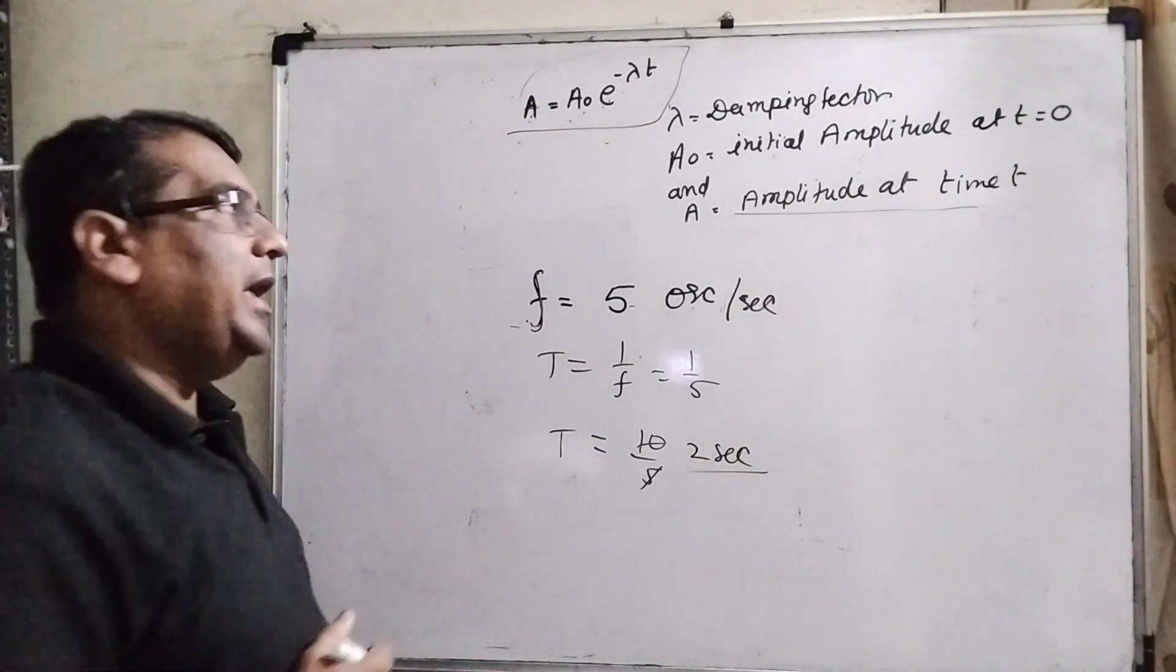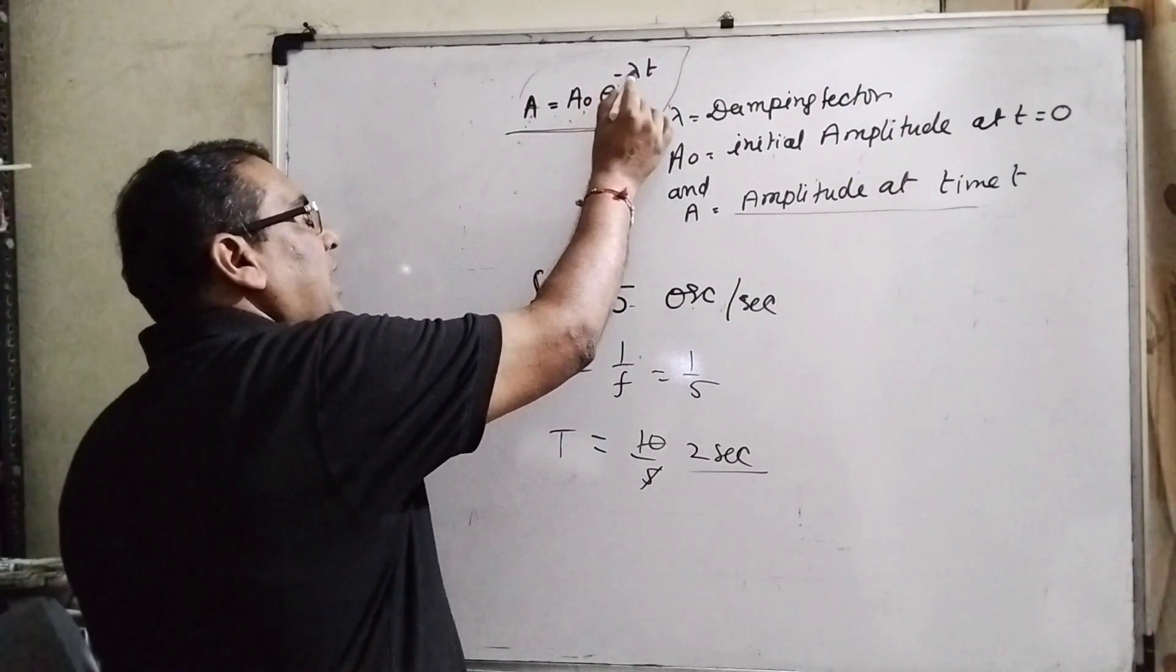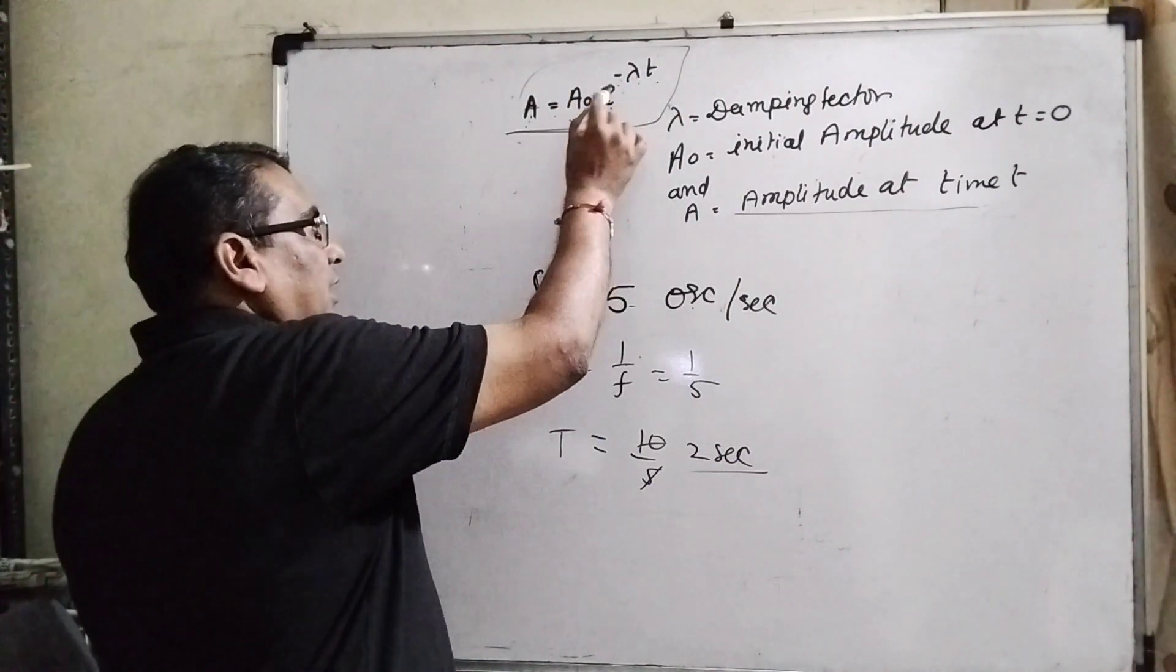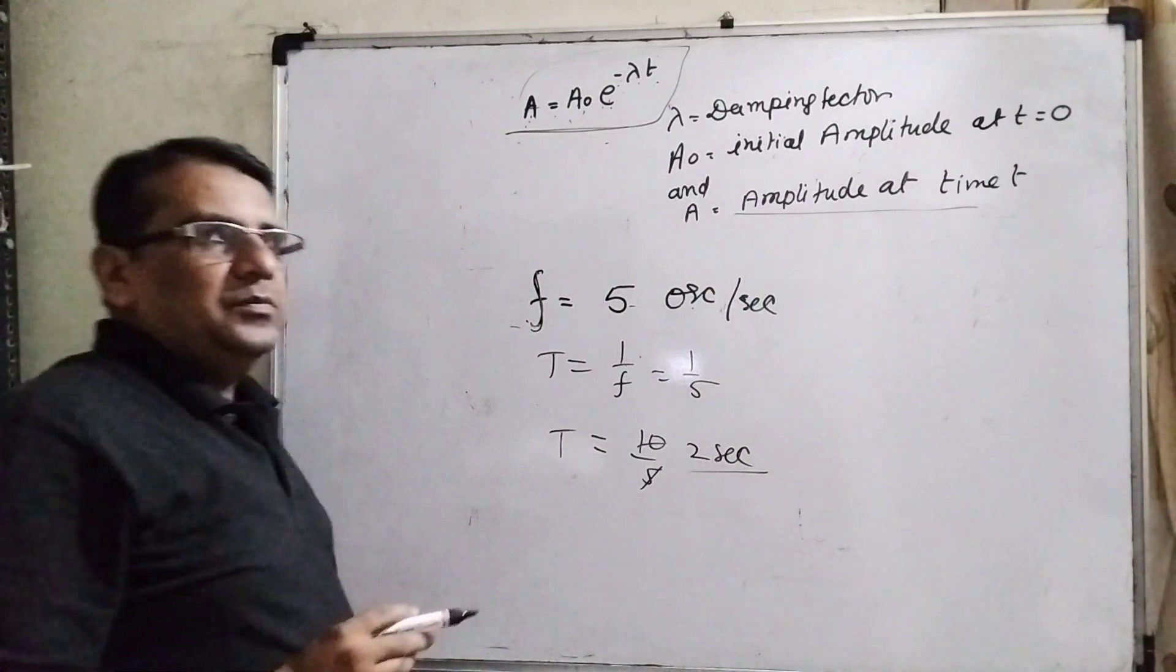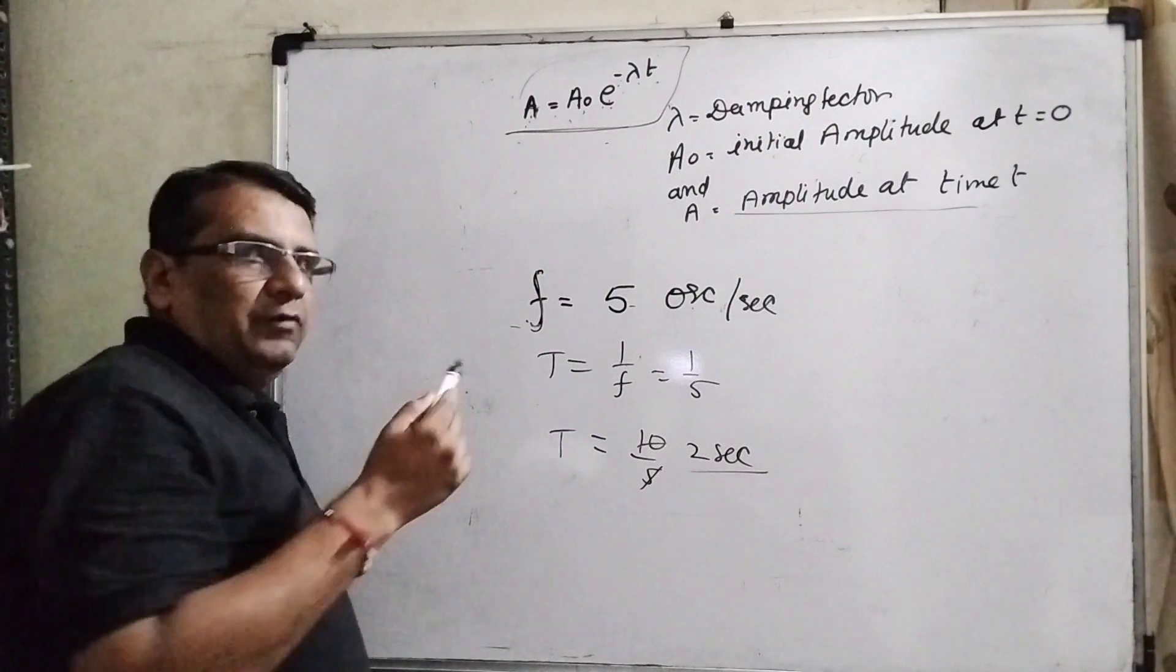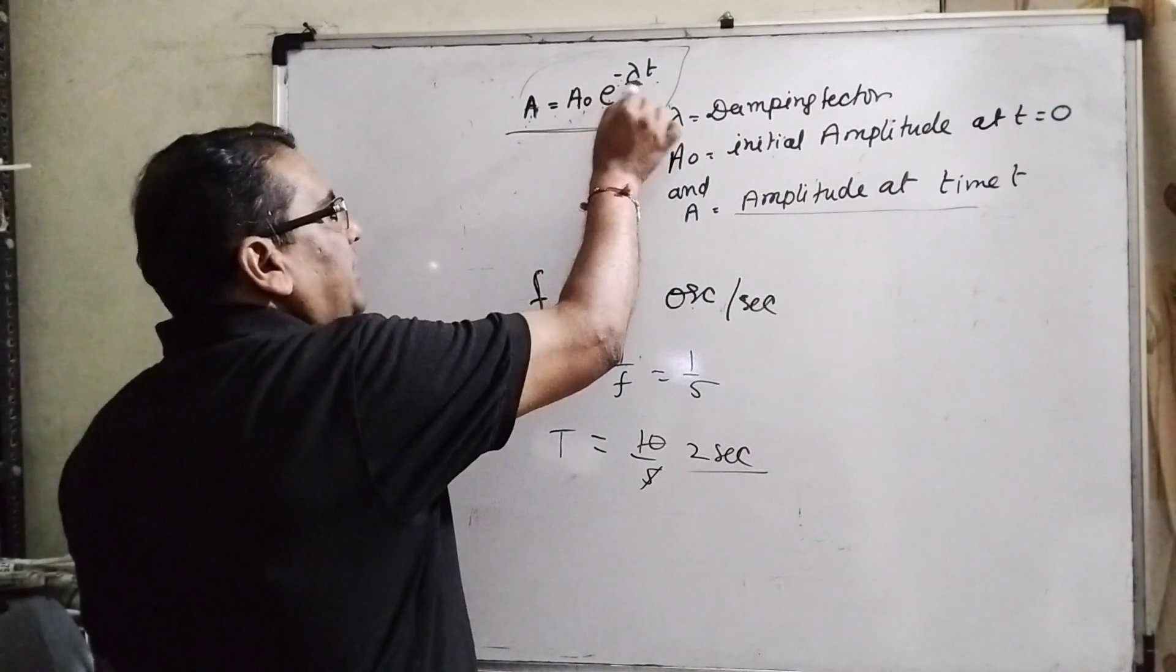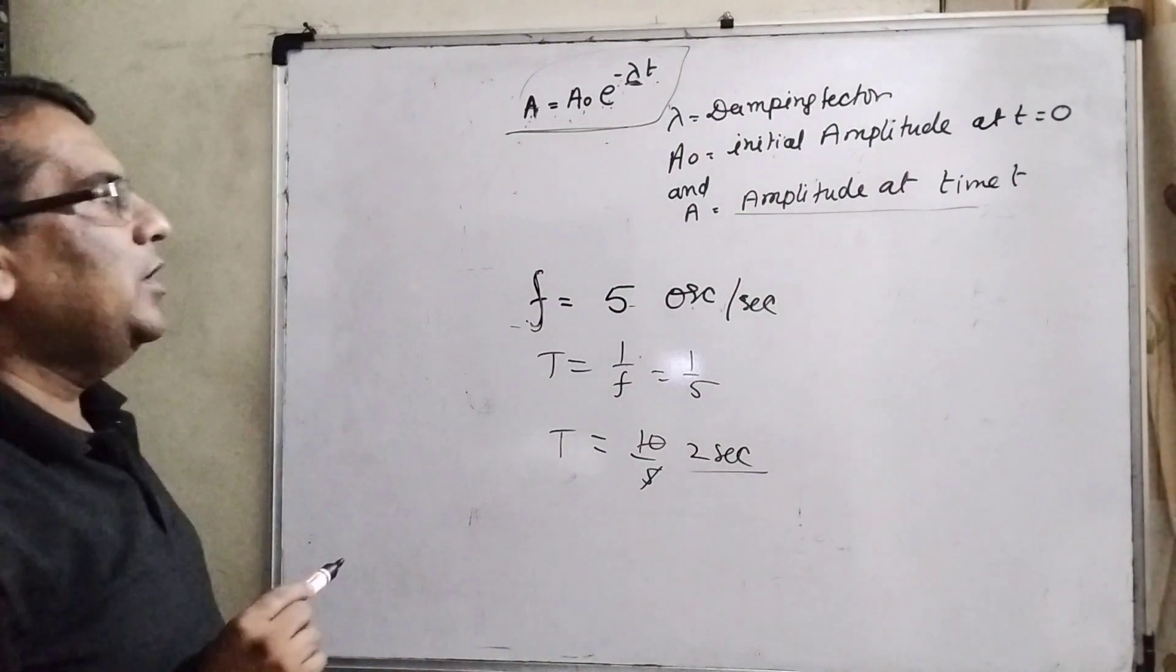Here we have given the damping oscillations: A equals A naught e raised to power minus lambda t. Here A naught is the amplitude when t equals 0, and amplitude A when t equals time. And here lambda is a damping coefficient or damping constant.